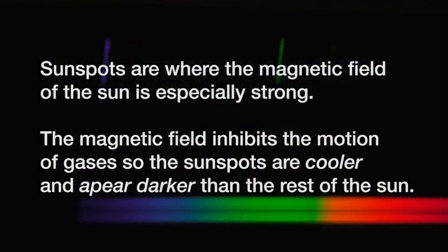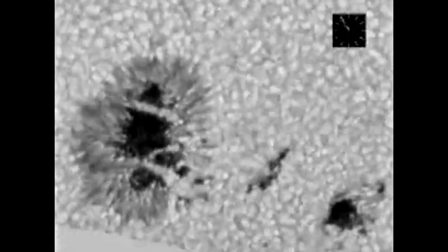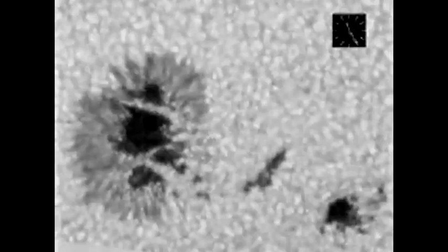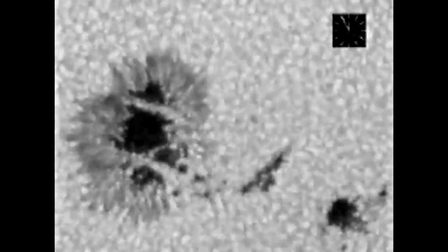The whole area around a sunspot is where the magnetic field of the sun is especially strong. Now the magnetic field inhibits the motion of the gases and it causes them to be cooler because of that. And they look dark compared to the rest of the sun because they're cooler in the sunspot where the magnetic field is strong. Take a look at this video and notice in the video how the gases of the sunspot region move less than the surrounding gas.